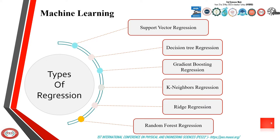In this work, different models are studied and their performance is compared to determine which method gives the best results for state of charge estimation. The methods applied in this presentation are Ridge, Lasso, ElasticNet, Gradient Boosting Regressor, Decision Tree Regressor, K-Nearest Neighbors Regressor, and Random Forest Regressor.